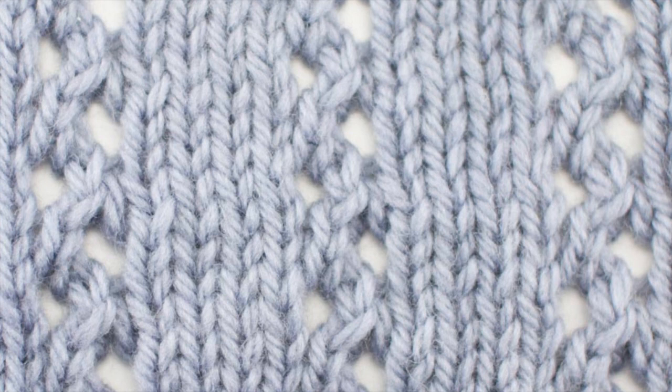This stitch here is called the zigzag eyelet column stitch, and you can find it in our video Stitchionary. And the column stitch is made up of these stitches right here.